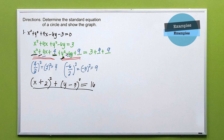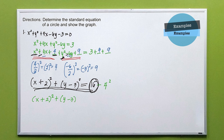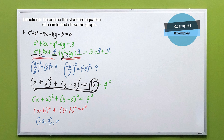Observe our answer — it is now in the standard form of the equation of a circle. Note that 16 can be written as 4 squared. Thus we have the quantity (x plus 2) squared plus the quantity (y minus 3) squared equals 4 squared. This matches the standard form (x minus h) squared plus (y minus k) squared equals r squared. So our center is (negative 2, 3) and our radius is 4.